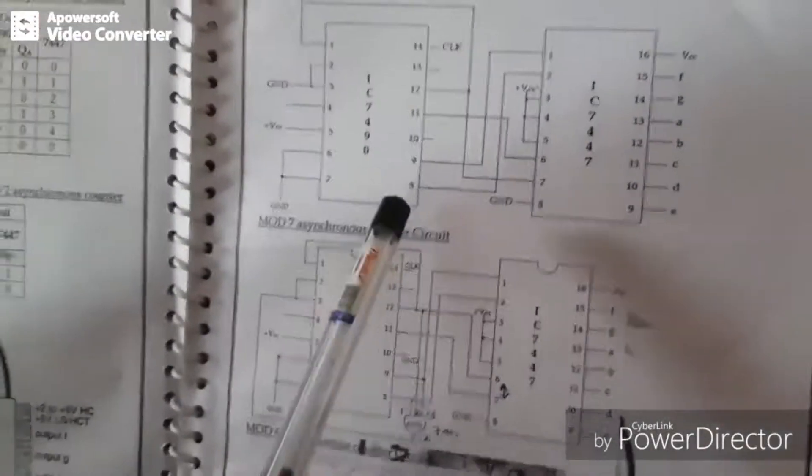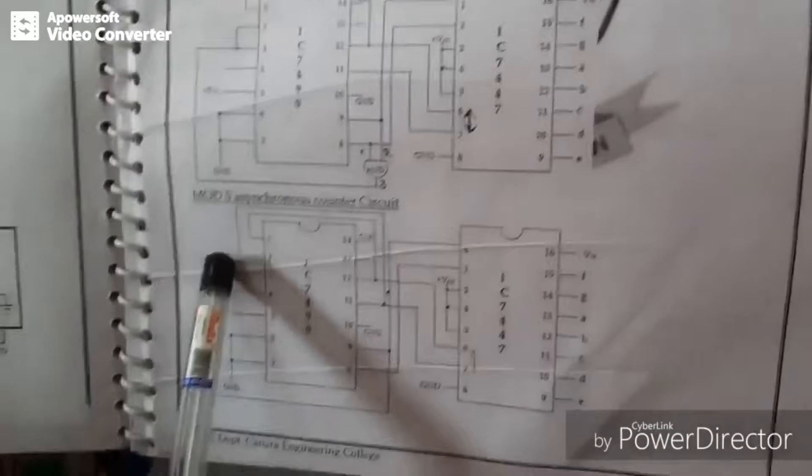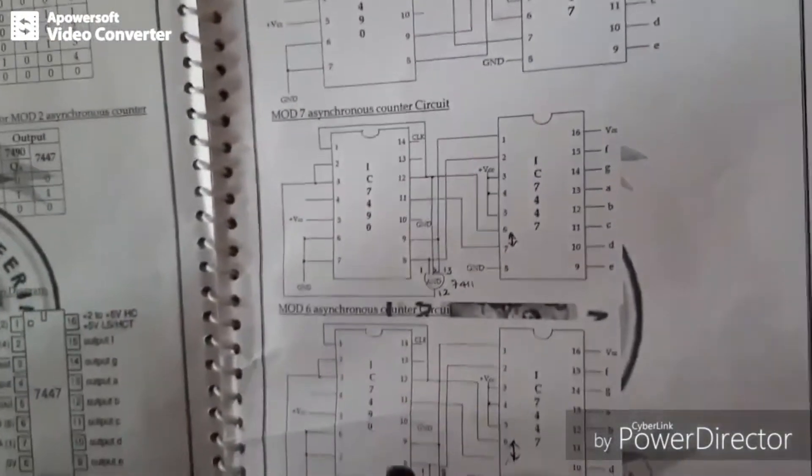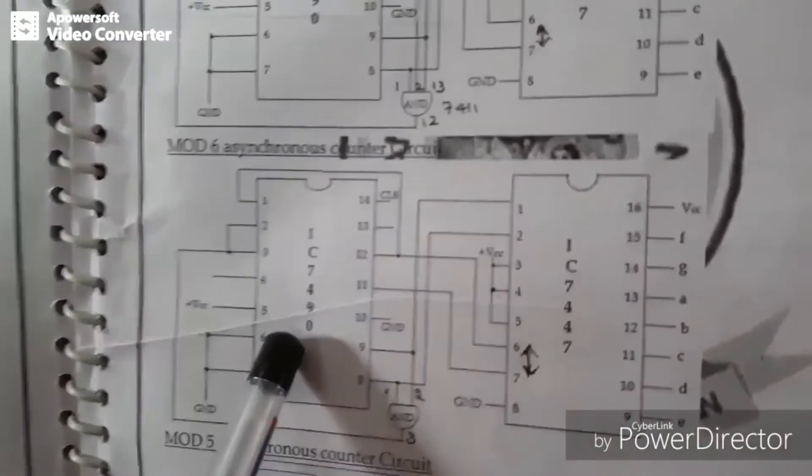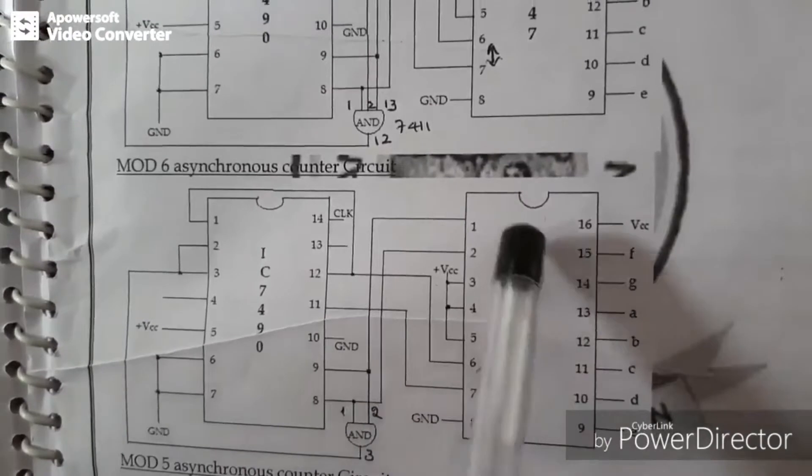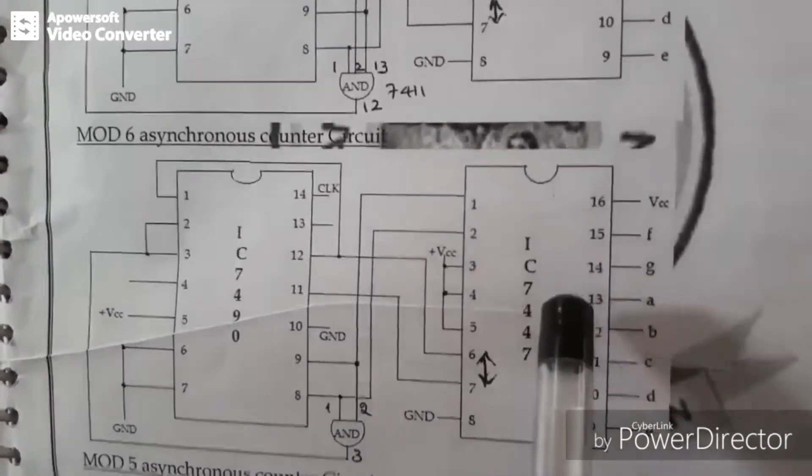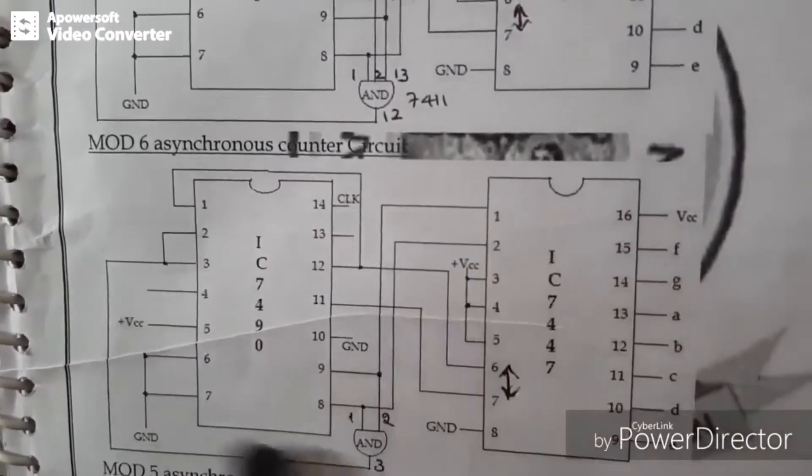For example, we have mod 10, mod 7, mod 6, mod 5, other than that mod 4 and mod 2 implementation. First we will see mod 6 implementation. Mod 6 implementation uses 7490 decade counter and 2-input AND gate and 7-segment display driver 7447. So we have to implement the connection as shown in the diagram.